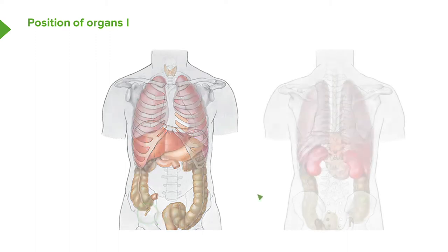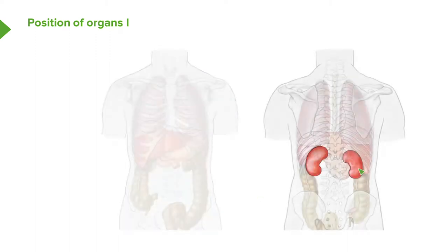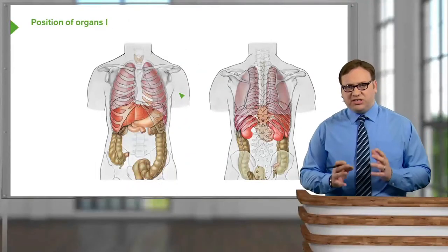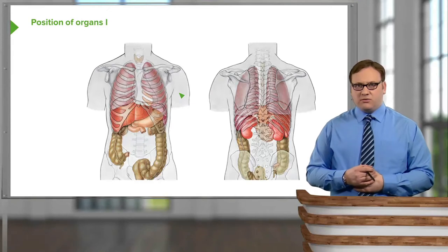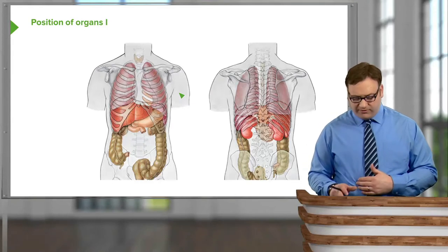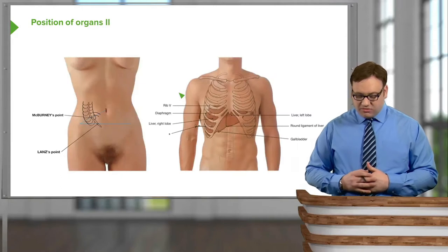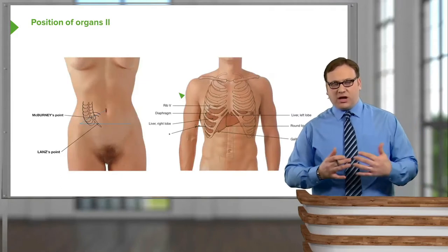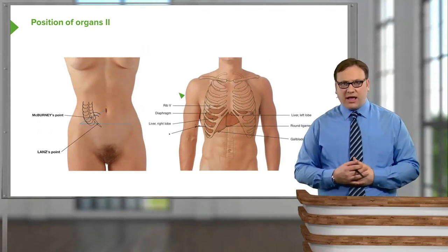This is in the anterior view. In the posterior view, we can see where the kidneys are located either side of the vertebral column. We can also see the spleen tucked up on the left-hand side. We'll look at the various positions of these organs as we go through the course. We can now relate the surface landmarks to specific organs like the liver and the appendix.